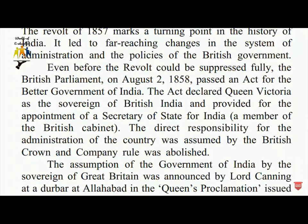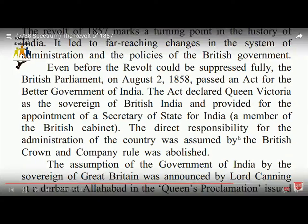The act declared Queen Victoria as the sovereign of British India and provided for the appointment of a Secretary of State for India, a member of the British cabinet, who was held responsible for administration. Company rule was abolished. The assumption of the government of India by the Crown was announced by Lord Canning at Allahabad in the Queen's Proclamation.